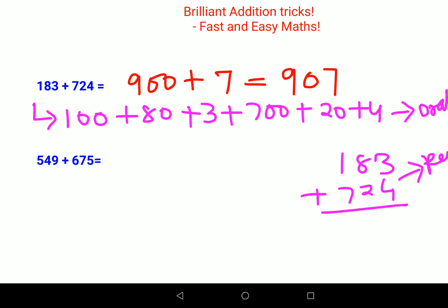Let's do this orally. 500 plus 600 gets you 1100, 40 plus 70 gets you 110, 9 plus 5 gets you 14. So basically you're getting 1224, that's your answer.